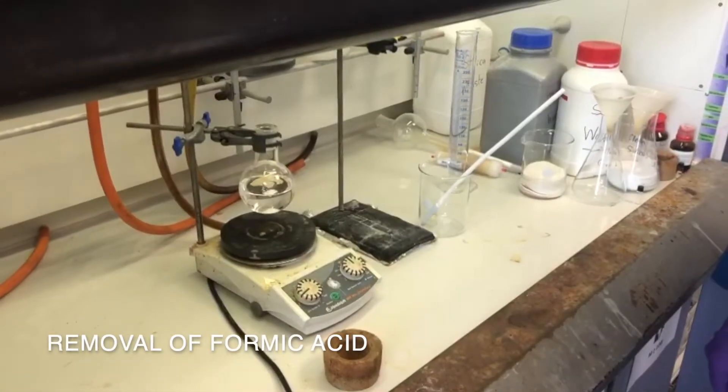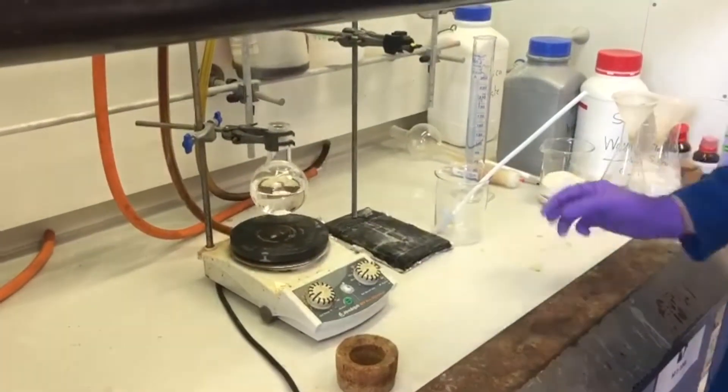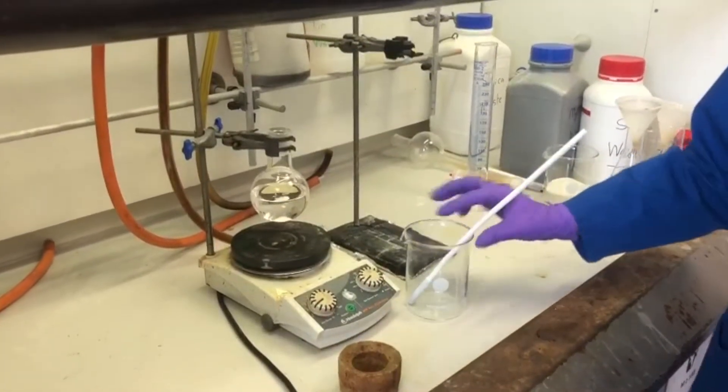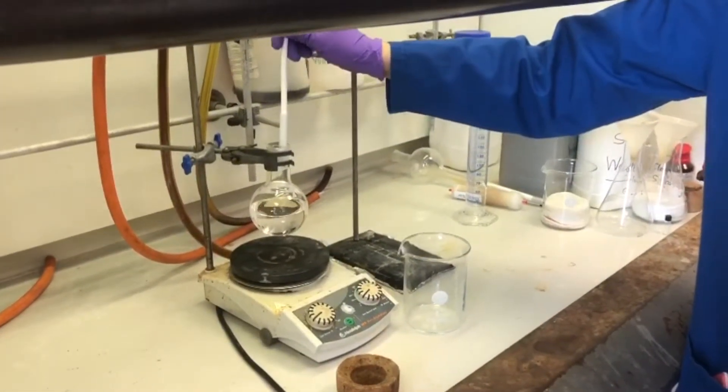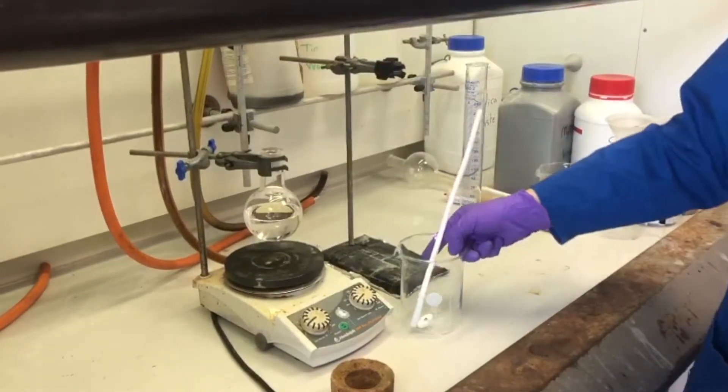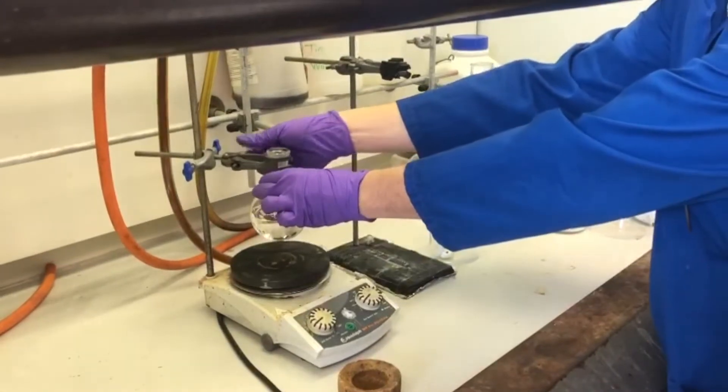Our reaction has now been stirring for an hour, so our dipeptide should be complete. So we're going to remove the stir bar. And we'll take our reaction and remove the formic acid by rotary evaporation.